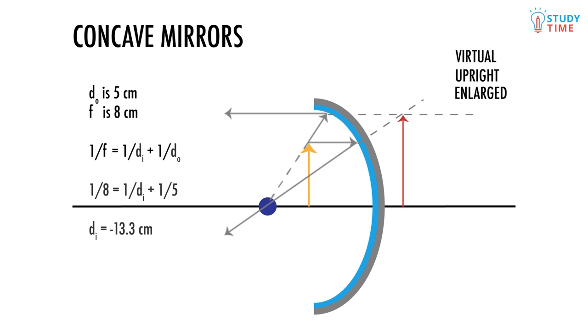Rearranging and solving, we find the image distance is negative 13.3 centimeters. Should this number be negative? The answer to that question is yes, it certainly should. We know this because we can see in the diagram above that the image of the pencil is behind the mirror, which makes it virtual. Therefore, the image distance will always be negative.